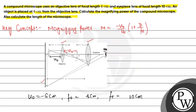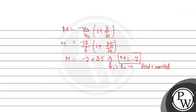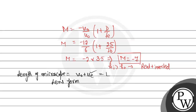According to the question, we have found the magnifying power. Now we need to find the length of the microscope. The length of the microscope is the total distance between the objective lens and the eye lens, which equals V0 plus UE. To find UE — the distance at which the object is placed from the eye lens — we will again use the lens formula for the eye lens.